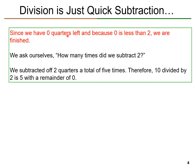Since we have 0 quarters left, and because 0 is less than 2, we are finished. Our finished row will have either 0 or a number less than the divisor — remember, 2 is the divisor in this problem. So in the finished row, we're going to have less than the divisor. 0 is less than 2. We ask ourselves: how many times did we subtract the divisor, or 2 in this example? We subtracted off 2 quarters a total of 5 times. Therefore, 10 divided by 2 is 5, with a remainder of 0.